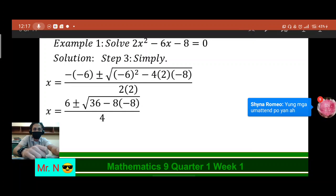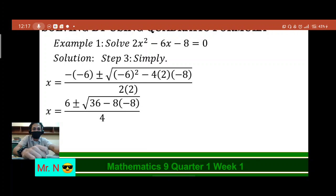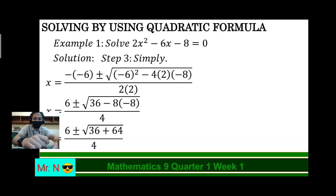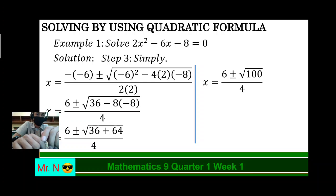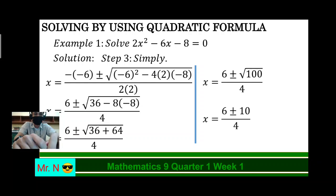Let's simplify further. We have 6 plus or minus square root of 36, and negative 8 times negative 8 is positive 64, all over 4. Next, we're going to combine the terms inside the radical sign, or square root sign. 36 plus 64 is 100. So we have 6 plus or minus square root of 100, all over 4. Now, the square root of 100 is positive or negative 10. So we have x equals to 6 plus or minus 10, all over 4.